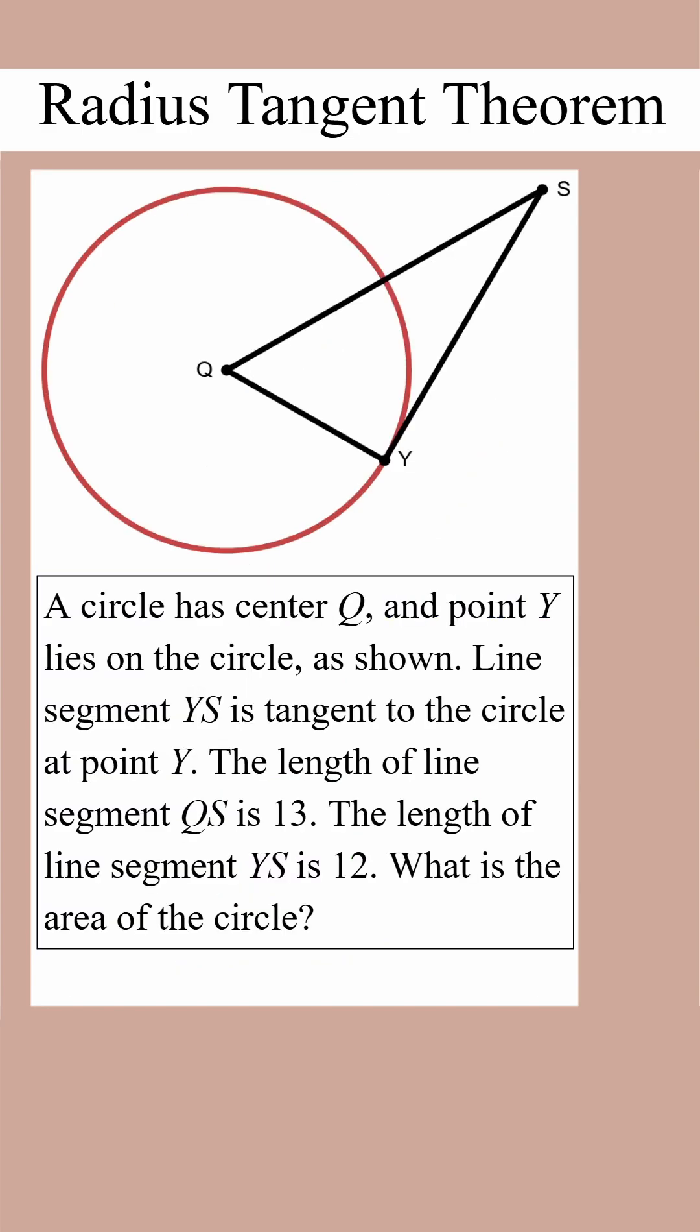In this example, we're given some key measurements, so we should start by adding them to the diagram. Next they tell us that line segment YS is tangent to the circle. This means that angle Y is a right angle.